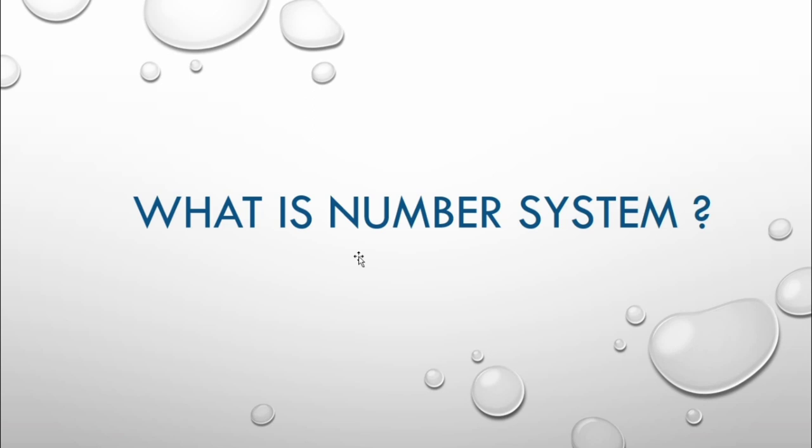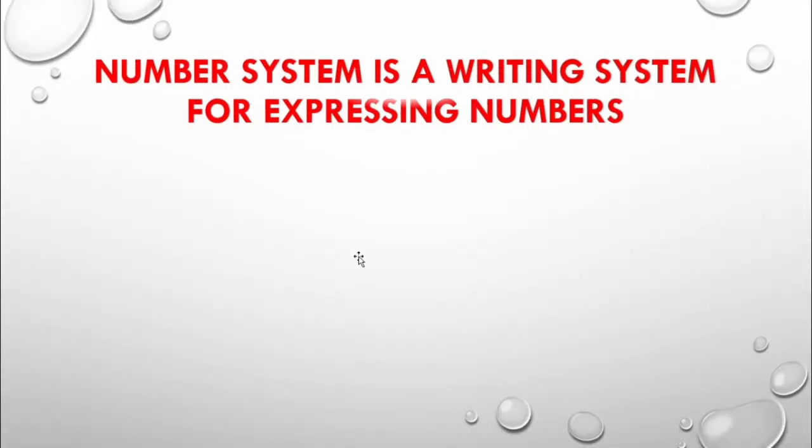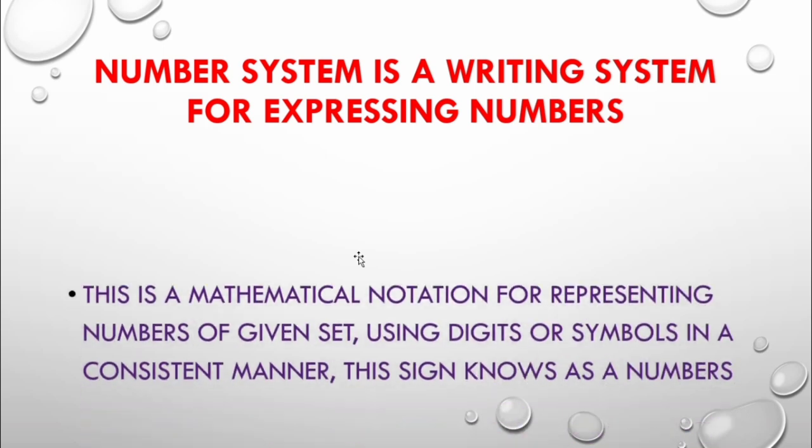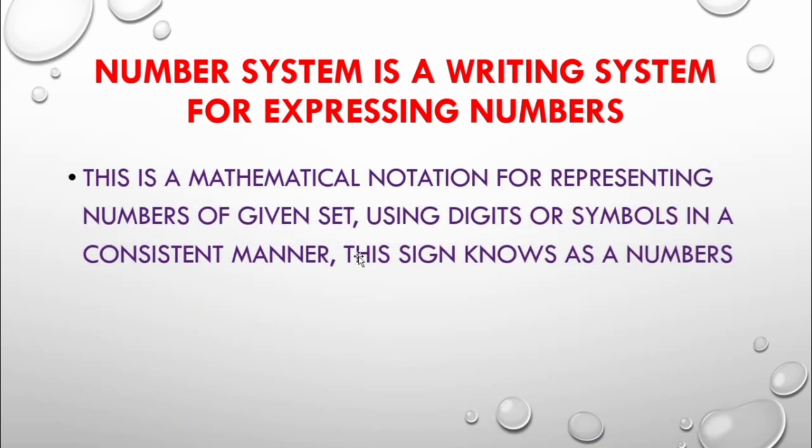Number system is a writing system for expressing numbers. When you are going to write systems for expressing numbers for any terms of use or purpose or daily life's use. This is a mathematical notation for representing numbers of given set using digits or symbols in a consistent manner.